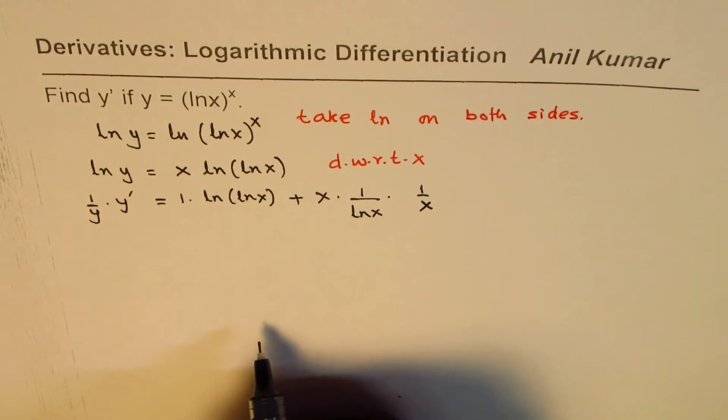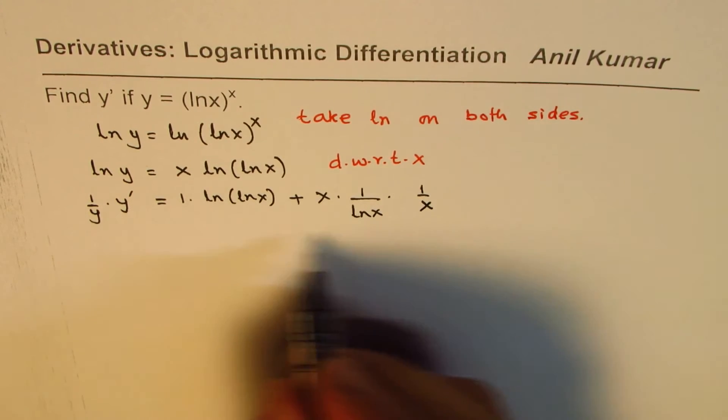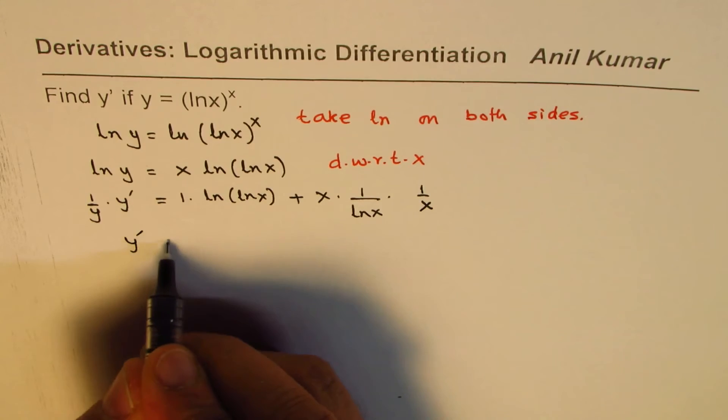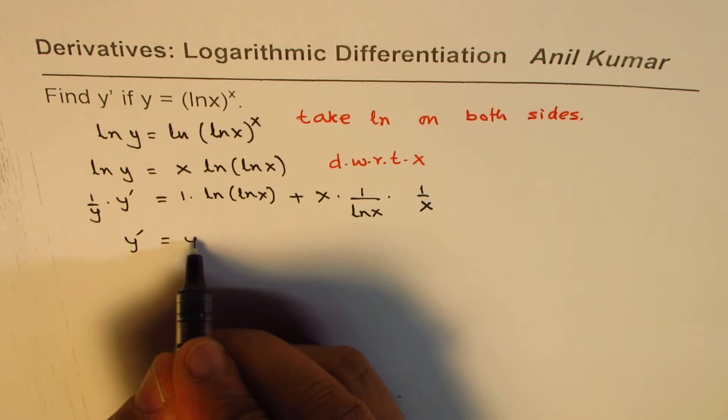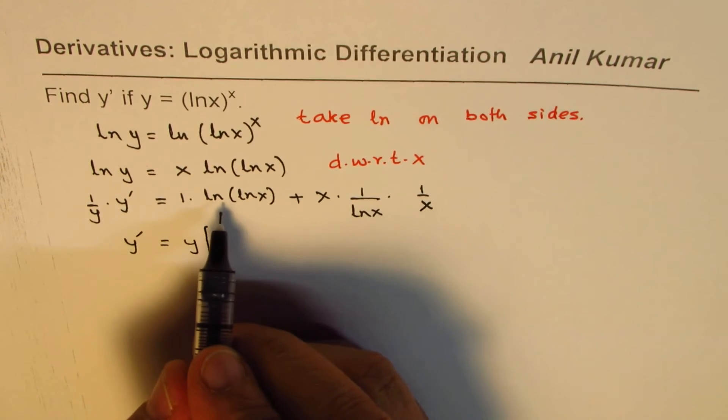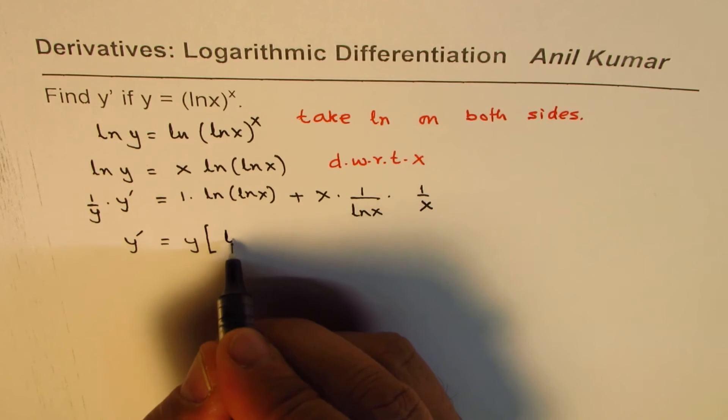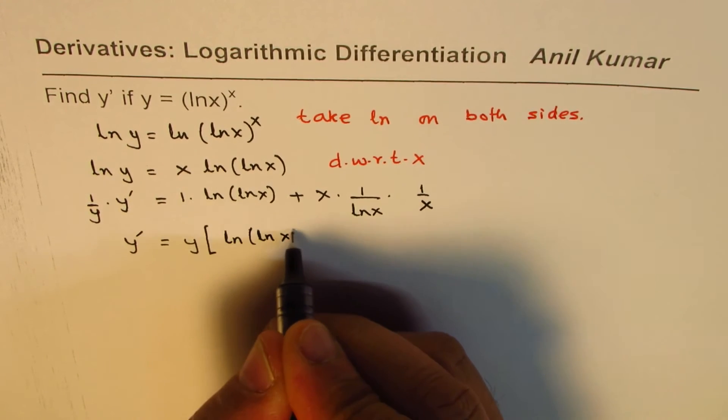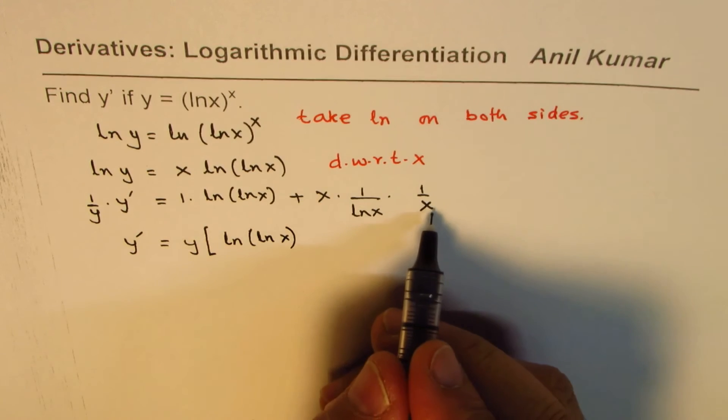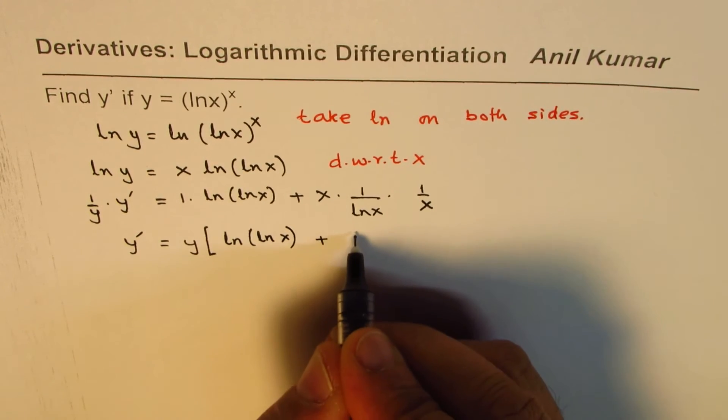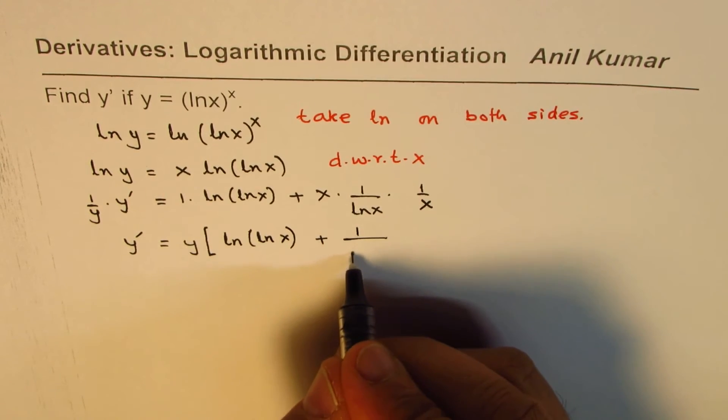So that is what you get. Now from here we can write the derivative equals to y times within brackets ln ln x plus x times 1 over ln x times 1 over x. x and x will cancel out so you get 1 over ln x.